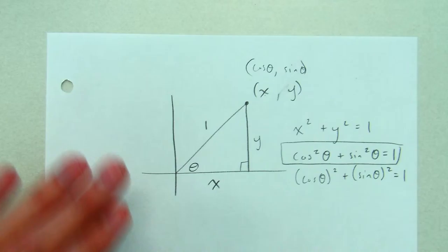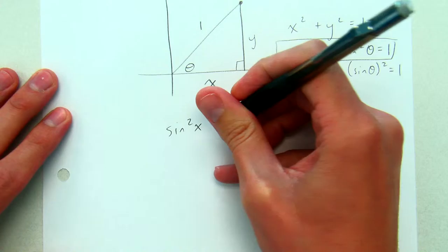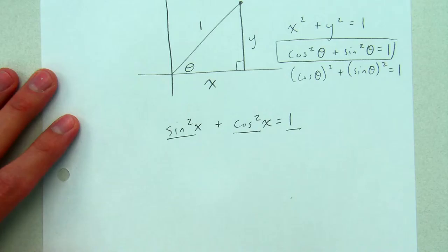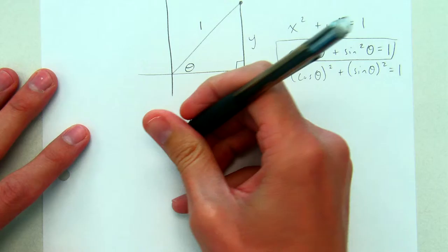So here's our first Pythagorean identity. In your book it's written as sine squared plus cosine squared equals one, and I'll switch to using x instead of theta, but we can use any variable we want. If you're having trouble memorizing the other two, you can get them by dividing this equation by either sine squared or cosine squared. I'll show you the sine squared approach.